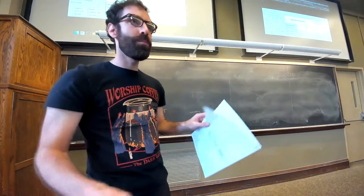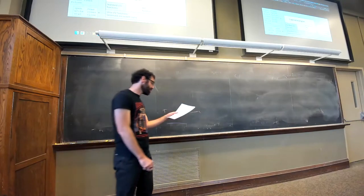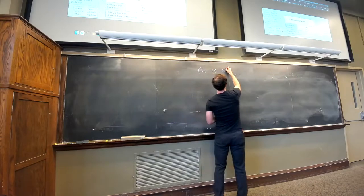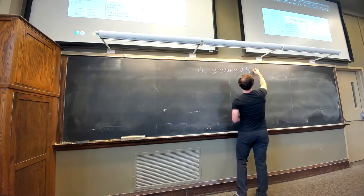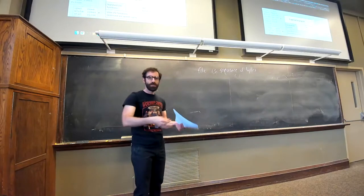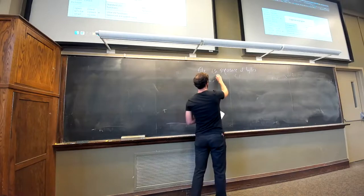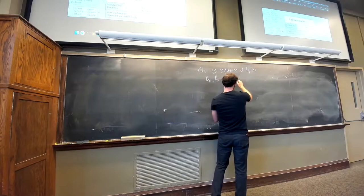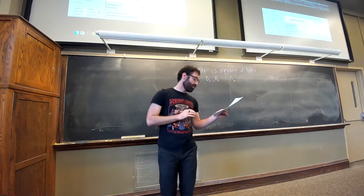So let's start with: what is a file on Linux? A file is just a sequence of bytes coming from somewhere — could be on the disk, could be something else. There's the first byte, the second byte, all the way up to byte m-minus-one, where m is the length of the file.